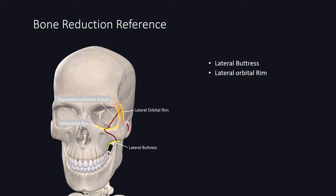Because the lateral orbital rim is thick bone, this area is typically well preserved even in severe trauma. As a result, this is typically where I'll start the plating process. Another key reference is the infraorbital rim. The fracture line superior and inferior to the infraorbital foramen can be checked for bony reduction.